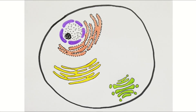Here is the Golgi body, or Golgi apparatus. The Golgi body looks a bit like endoplasmic reticulum, but don't get them confused. The Golgi consists of a stack of membrane-bound discs piled on top of each other, and mostly they are not connected between the layers. Molecules like proteins move through the Golgi, where they are refined and packaged for their final function.